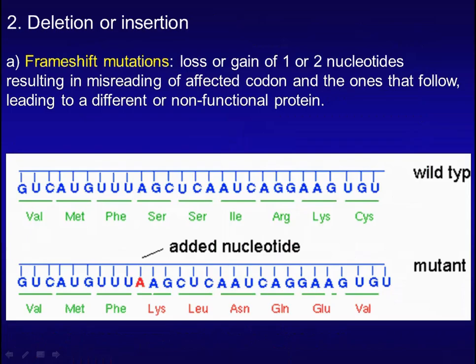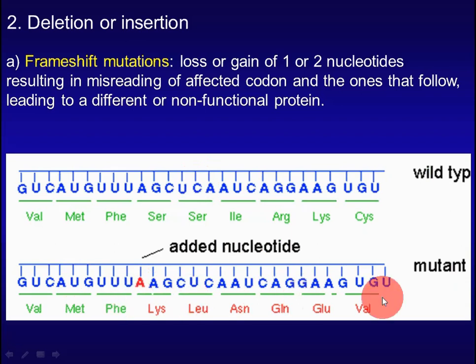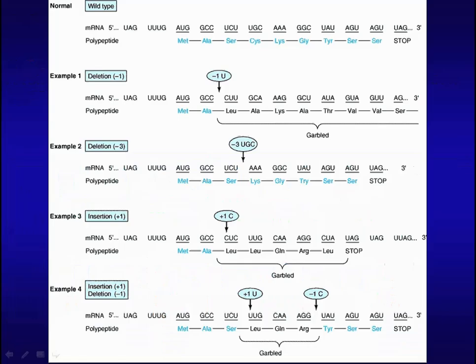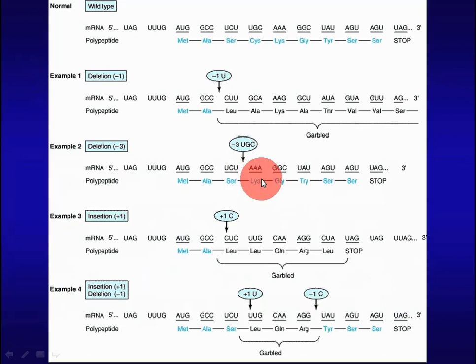Frameshift mutation is caused by loss or gain of one or two nucleotides, resulting in misreading of the affected codon and the ones that follow, leading to a different or non-functional protein. When one nucleotide is added to the sequence, the rest of the sequence changes its meaning. But if we delete three nucleotides, this leads to a deletion of one amino acid, and the rest of the sequence is still intact.